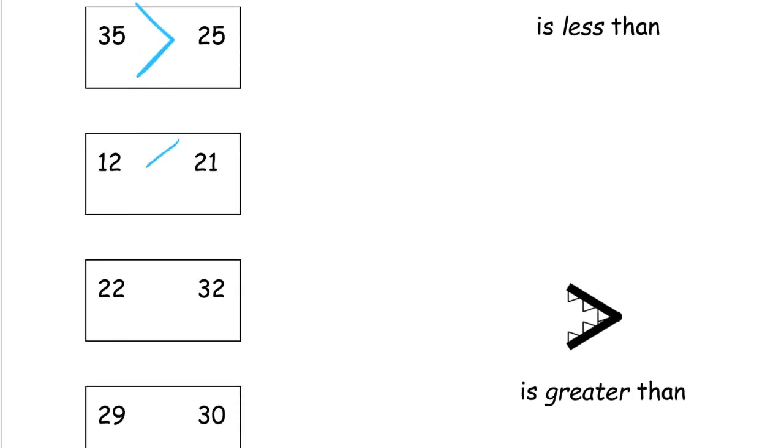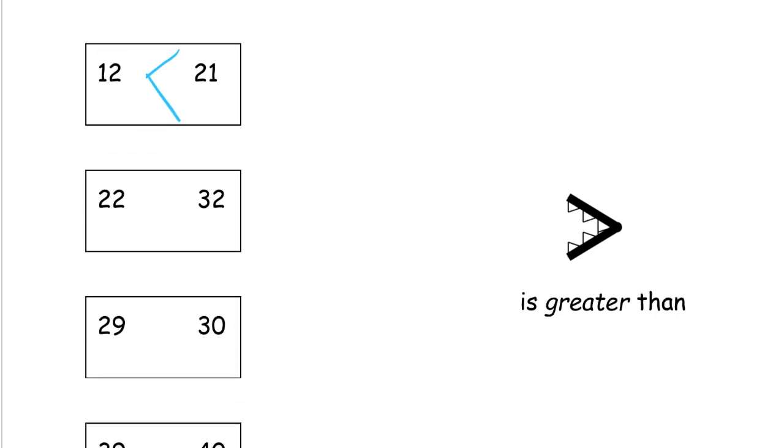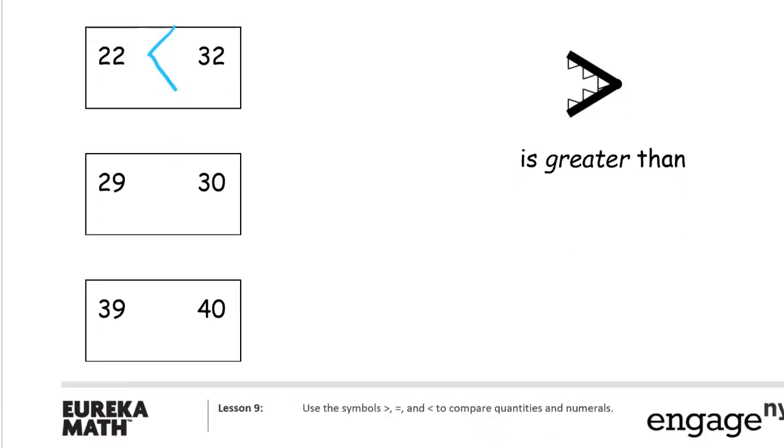32 and 22, 32 is bigger, greater than. And then we have 29 and 30, 30 is greater. 40 and 39, 40 is greater.